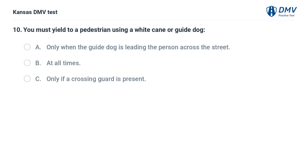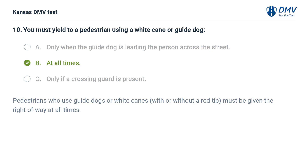You must yield to a pedestrian using a white cane or guide dog: A. Only when the guide dog is leading the person across the street. B. At all times. C. Only if a crossing guard is present. The answer is B. At all times. Pedestrians who use guide dogs or white canes, with or without a red tip, must be given the right of way at all times.